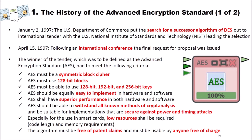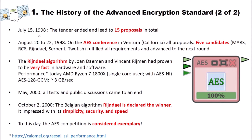So AES can be used worldwide — it was not only intended for the US market, but intended to be used by everyone, free of charge. In July 15, 1998, the tender ended and led to 15 proposals in total. On the AES conference in Ventura, California from August 20 to 22, 1998, all proposals were analyzed. Five candidates — Mars, RC6, Rijndael, Serpent and TwoFish — fulfilled all requirements and advanced to the next round in the AES competition.